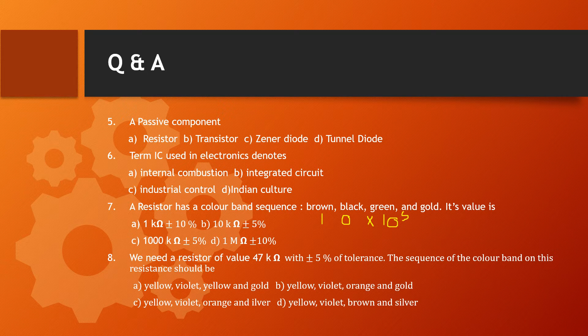Describing the color coding sequence: the first two bands give digits, the third is the multiplier, and the fourth color (gold) represents the tolerance. Gold tolerance means plus or minus 5%.